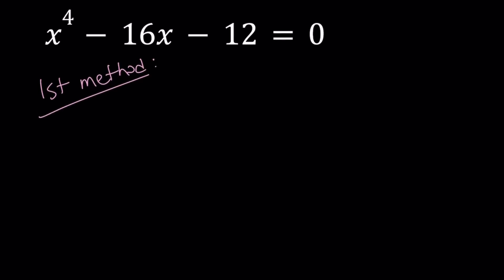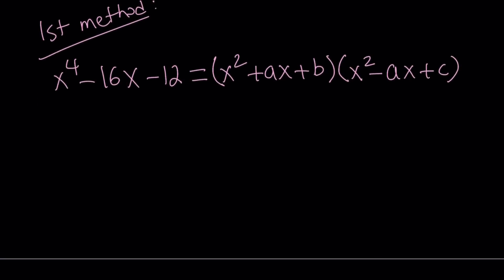So for my first method, I'm going to factor this into two quadratics. I'm choosing the second one so that the x cubed term cancels out. So I need x squared minus ax plus c here. ABC are constants, so we're going to try to find the value of a, b, and c.